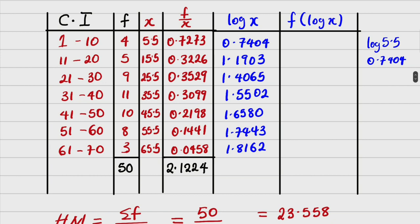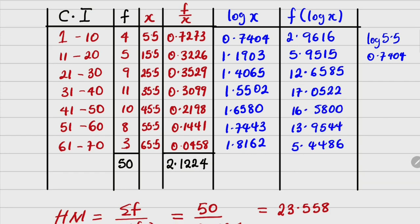The next one is to now multiply it by f. So 4 times 0.7404 will give us 2.9616. Then 5 times 1.1903 will give us 5.9515. The next is 9 times 1.4065, which will give us 12.6585. We have everything. What we need to do is find the sum of these because the formula requires that we have the sum of these, which using calculator to add, we get 74.6068.